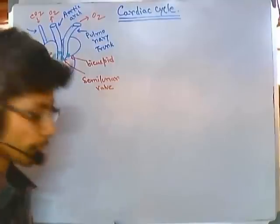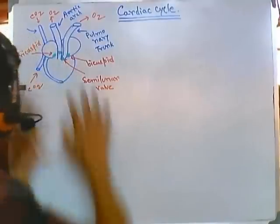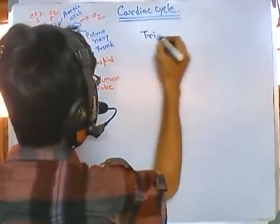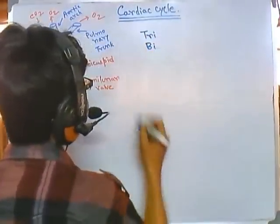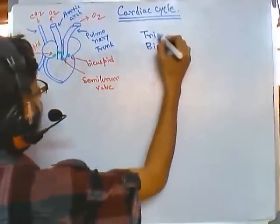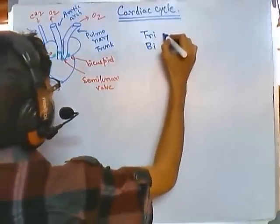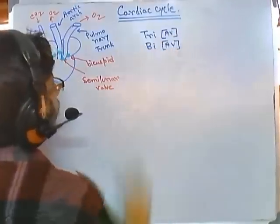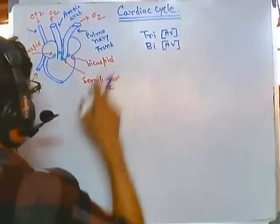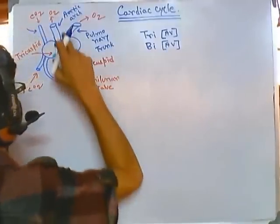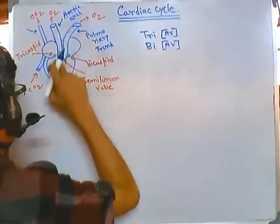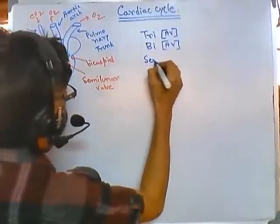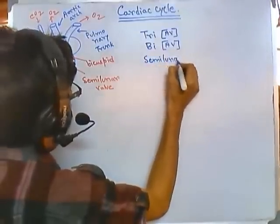So this is very important. We have four different types of valve. The tricuspid valve and bicuspid valve are also called AV valves, or atrioventricular valves. We also have semilunar valves — one is called the aortic semilunar valve and the other is the pulmonary semilunar valve. So we have two semilunar valves, one tricuspid, and one bicuspid.